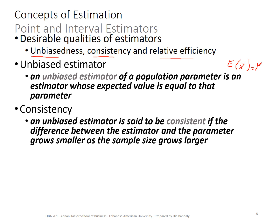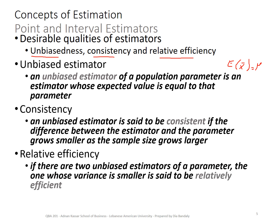Relative efficiency means that if you have a choice between two estimators, the one with the smaller variance is relatively more efficient. This applies to x-bar because sigma of x-bar equals sigma over the square root of n. As we increase the sample size, the denominator increases, so sigma of x-bar decreases. This means we can decrease the variance of x-bar and achieve very high relative efficiency.